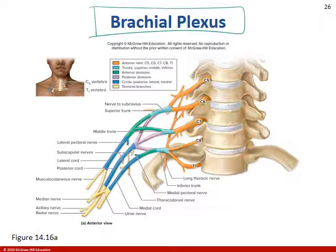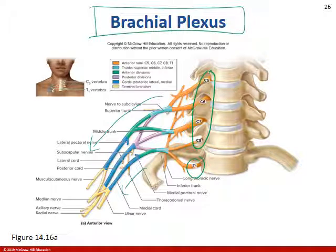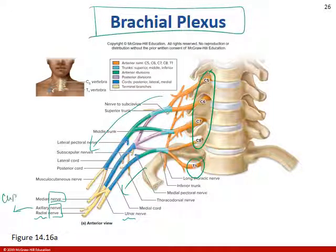The brachial plexus is formed from cervical nerves 5, 6, 7, and 8, and thoracic nerve 1. You can follow the branching out to specific named nerves that innervate different areas of the upper body — for example, the ulnar nerve and the axillary nerve (named for the underarm region we learned in chapter 1). The brachial plexus ultimately splits into individual nerves innervating specific parts of the arm and shoulder.